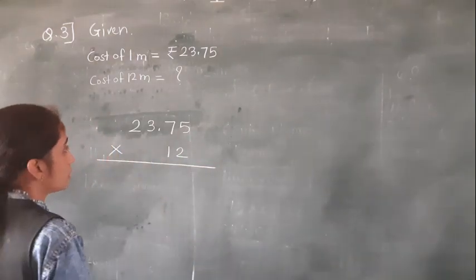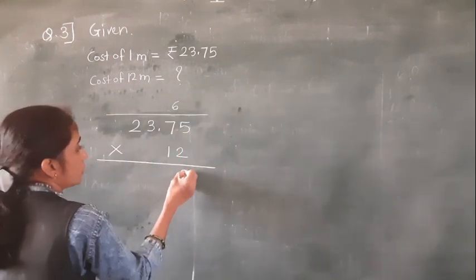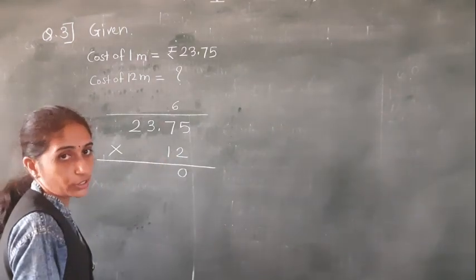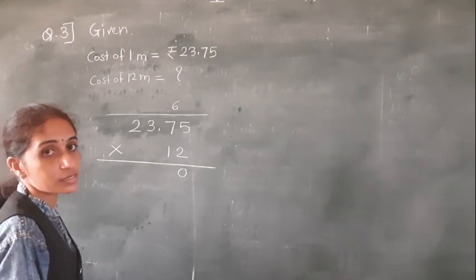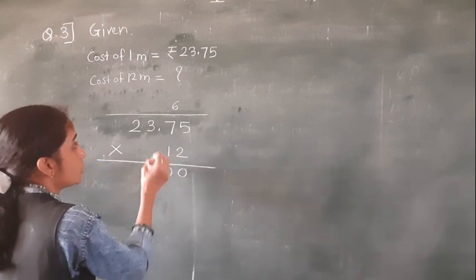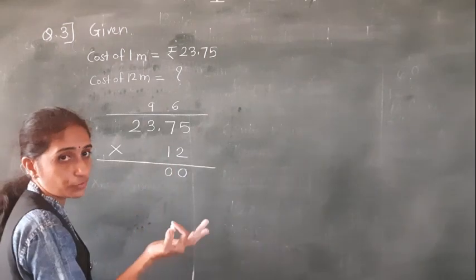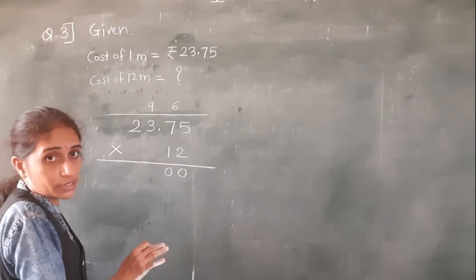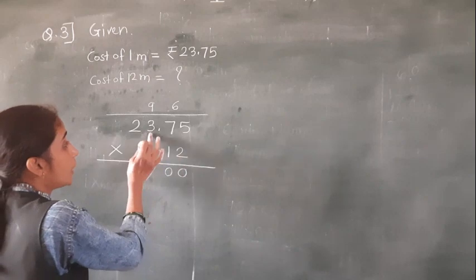2×5=10, carry 1. 2×7=14, 14+1=15, carry 1. 2×3=6, 6+1=7. Then 1×5=5, 1×7=7, 1×2=2. Solve like a simple multiplication, then count the number of decimal digits and place the decimal point.